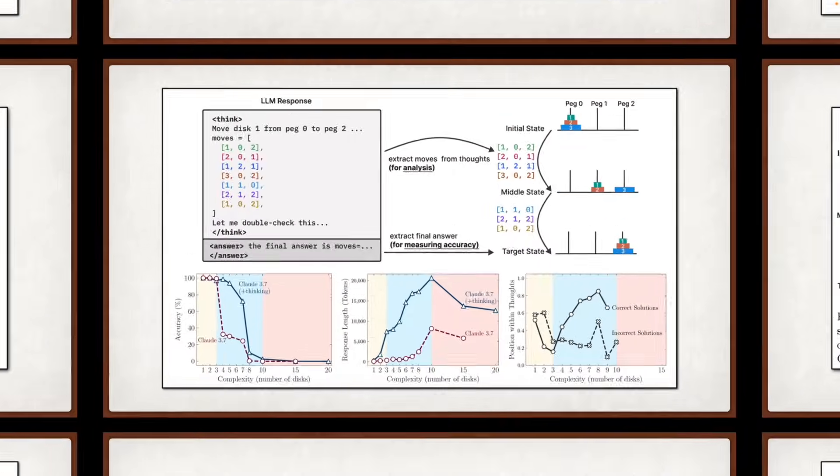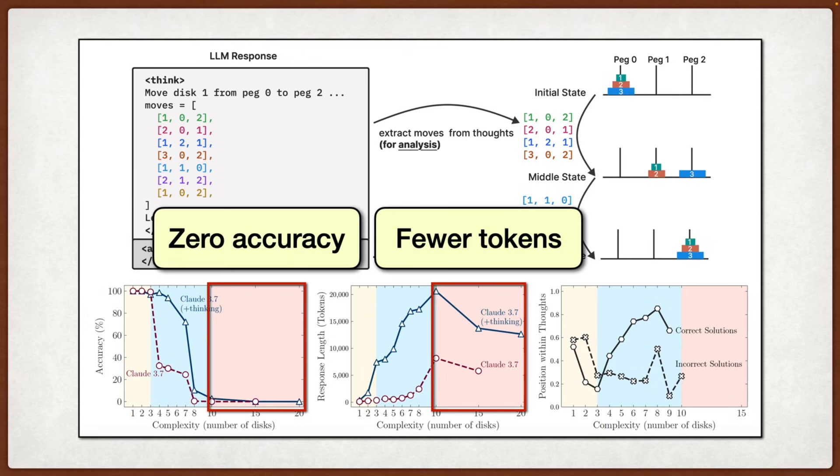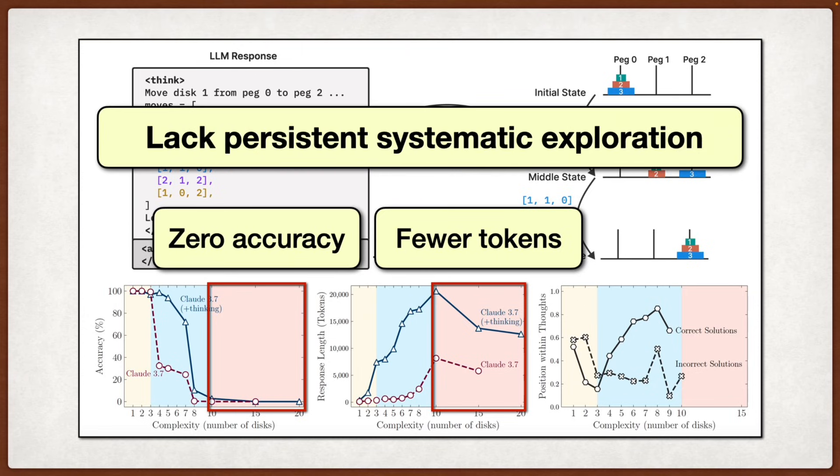The counterintuitive finding that models think less when problems get harder is particularly troubling because it suggests these systems lack the kind of persistent systematic exploration you'd expect from true reasoning and the failure to execute given algorithms points to deep issues with logical consistency. While the paper's experimental design is solid and the findings are compelling, I do wonder if the authors might be slightly too pessimistic about what these models can do in domains where the reasoning is less about strict logical rules and more about flexible problem solving.